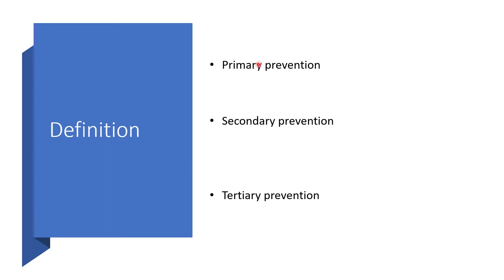For example, all measures to prevent exposure. As we continue, you can pick out the primary prevention points by yourself. Secondary prevention will include all measures to minimize the first impact of schistosomiasis.